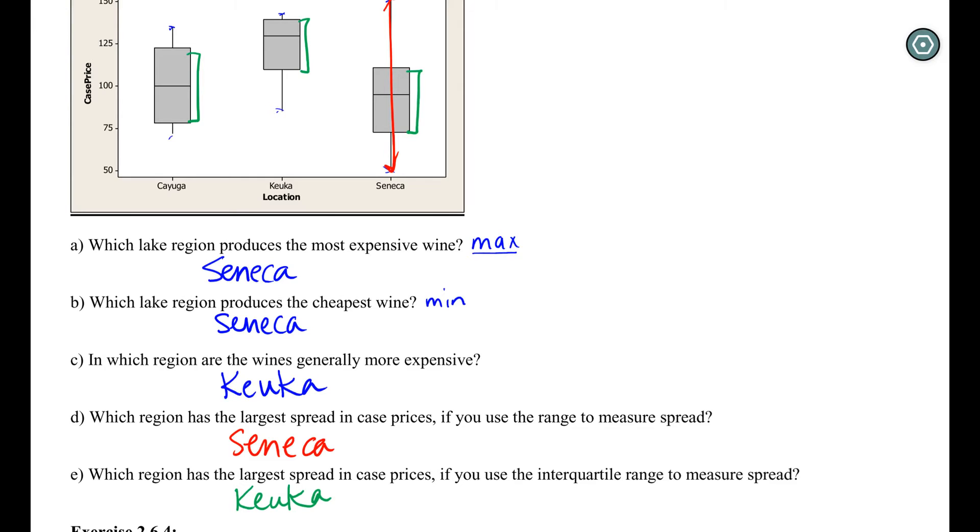That's just one thing I could ask you to do in terms of interpreting these boxplots is ask you about the extreme values, ask you about general center type questions, which is the most expensive or which class did the best on the exam or any question like that. And I can also ask you questions about spread, especially the range, the max to the min or that IQR, the Q3 to Q1 section.